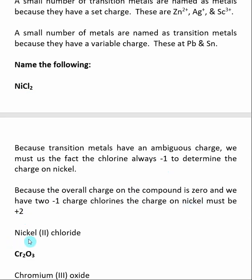To make the overall compound neutral, nickel needs to be plus two. The name is the name of the transition metal, then the charge of the transition metal in Roman numerals — nickel was plus two, so we put the Roman numeral II. Then the first syllable of the negatively charged species: chlorine gives us "chlor", and then you add the "-ide" ending — so nickel(II) chloride.